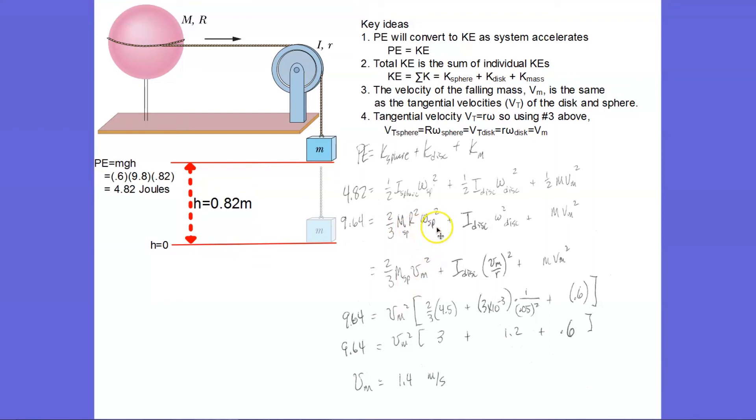And now I need to get the variables in terms of a single variable so I can solve this. So I'm going to choose to replace omega with velocity. How are they related?